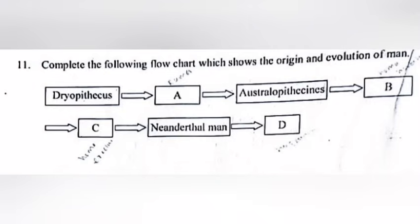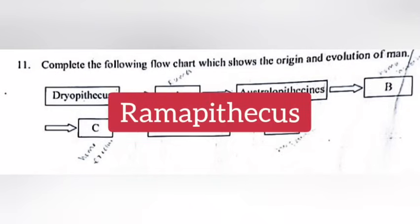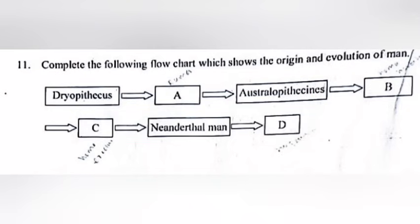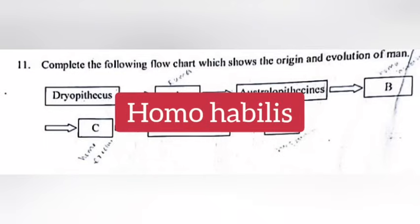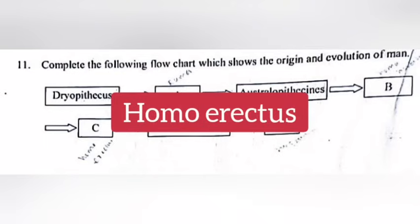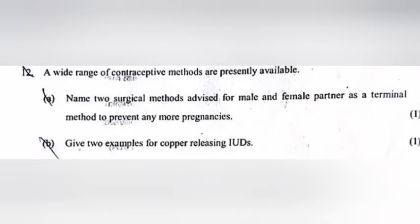Question 11: Complete the following flowchart which shows the origin and evolution of man. Answer: A. Ramapithecus, B. Homo habilis, C. Homo erectus, D. Homo sapiens.